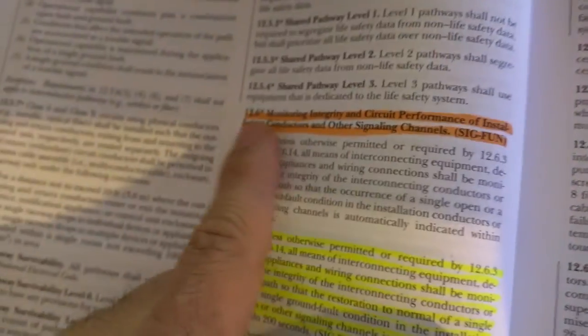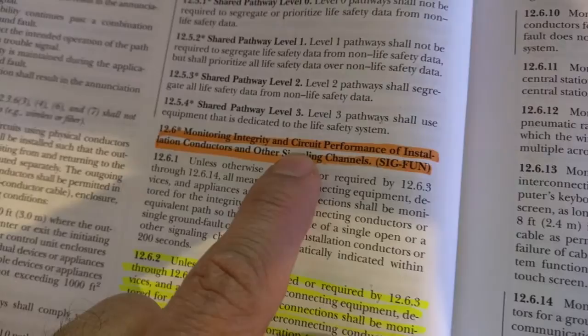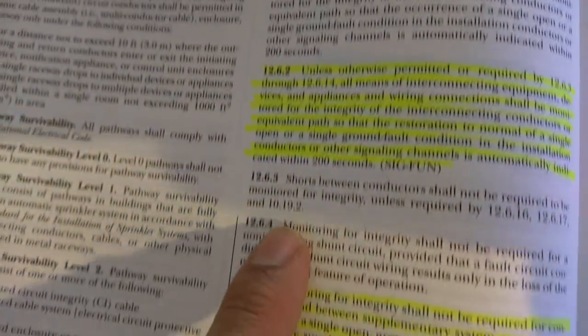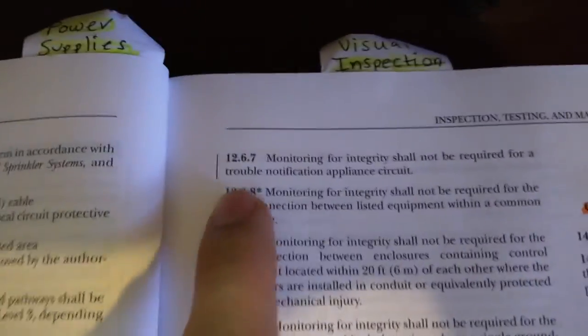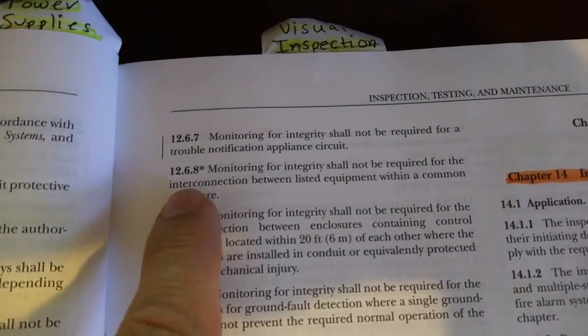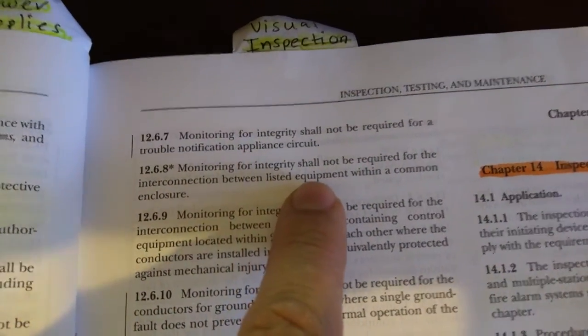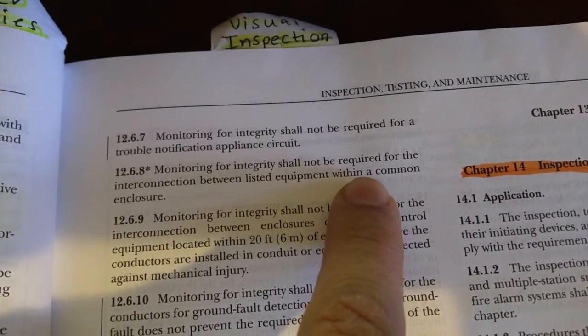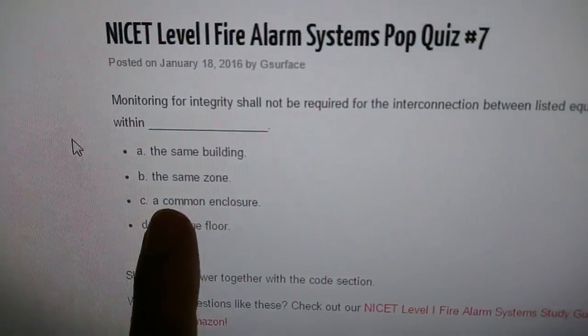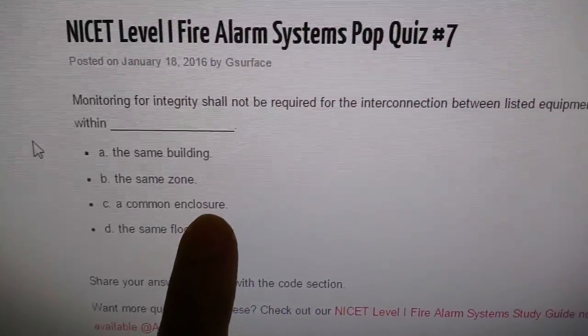Let me go to 12.6. Here is 12.6 — monitoring for integrity and circuit performance. Basically what you want to do is go down each section until you come across the answer, and here it is right here: monitoring for integrity shall not be required for the interconnection between listed equipment within a common enclosure. So the answer to this question is C, a common enclosure.